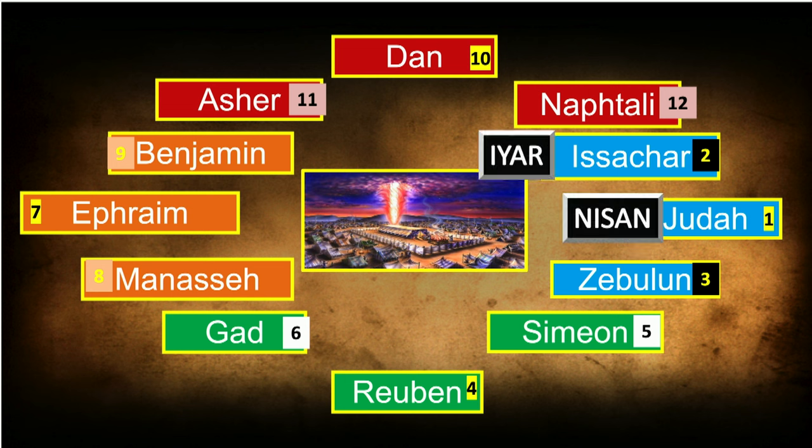In Exodus 17:7-8, the name of that place was called Massah — that is, testing or trying — and Meribah, meaning strife, because they tested the Lord and said, 'Is the Lord among us or not?' And then what happened? Amalek comes. You see murmuring, complaining, and war. That was the 27th of Iyar. Do you know what happened on the 27th of Iyar? That was the 40th day of the Omer when Messiah rose. That's fascinating.